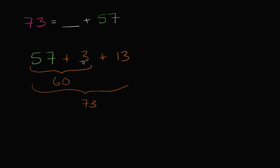So what did I add to 57 to actually bridge the gap? I added three, I added three plus 13. 16, so I added 16. So 16 plus 57 is equal to 73.